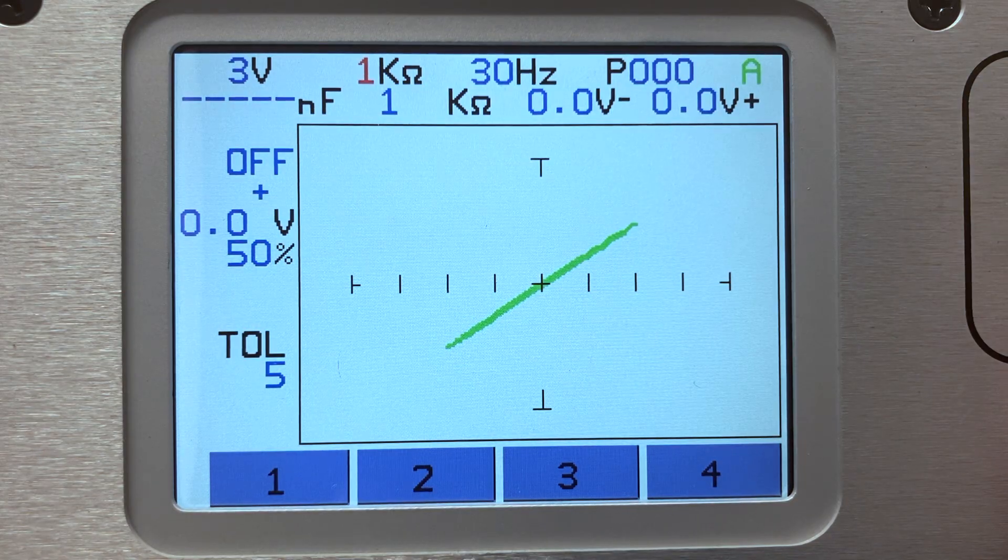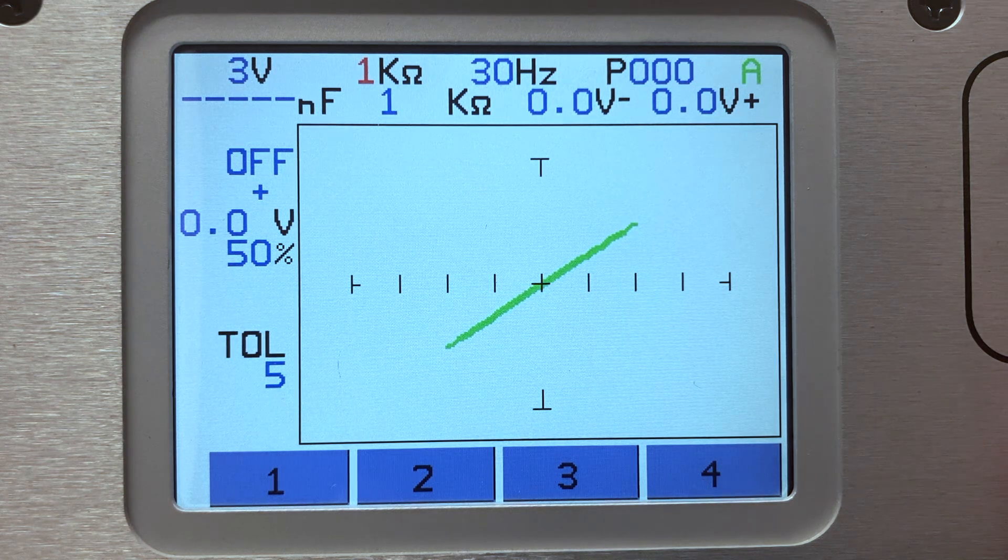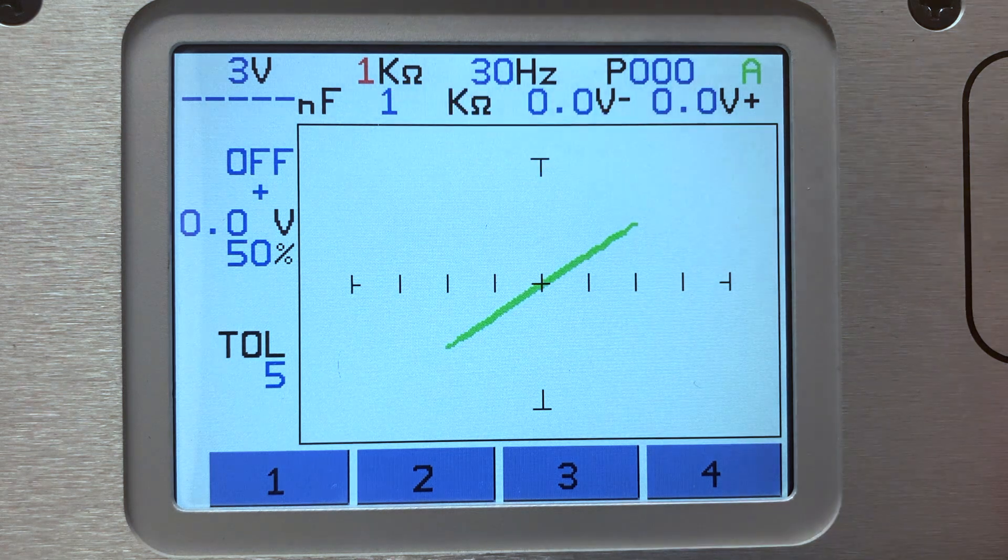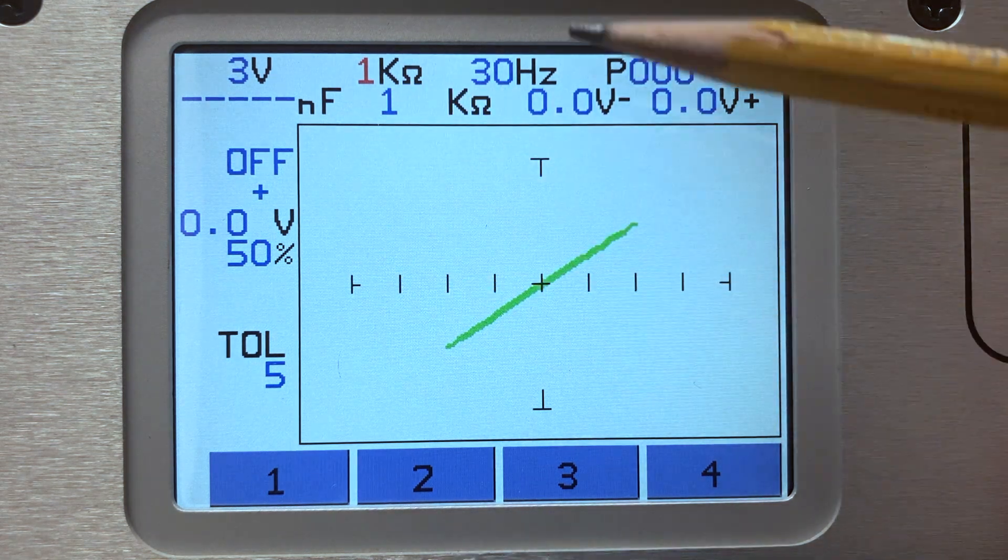For example, here is a 1k ohm resistor tested using the 1k ohm range on the tracker. Note that the angle of the signature is halfway between horizontal and vertical.